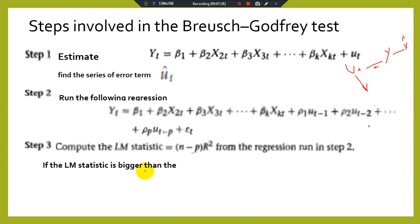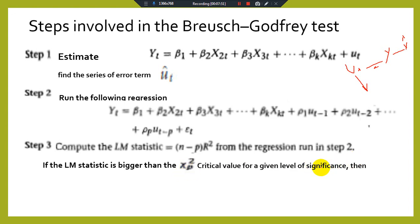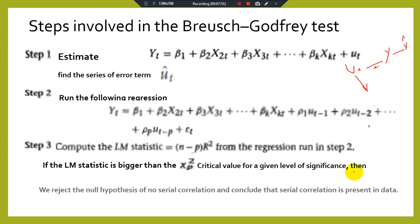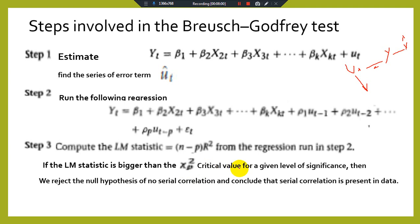If the LM statistic is greater than the chi-square critical value at your chosen level of significance (1%, 5%, or 10%), you reject the null hypothesis and conclude that autocorrelation or serial correlation is present in the data. If the LM statistic is less than the critical value, you conclude that there is no autocorrelation present in your error term.